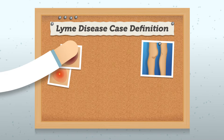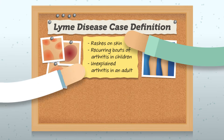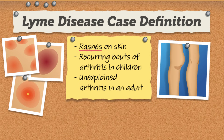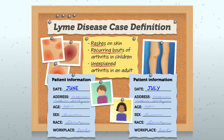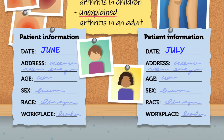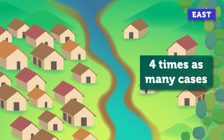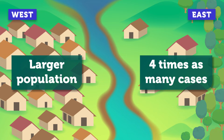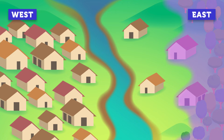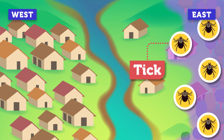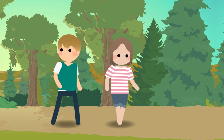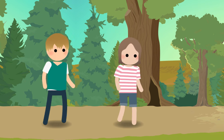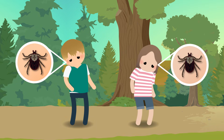First, the researchers put together a case definition. They studied clinical diagnoses in previous years that seemed out of the ordinary, and defined Lyme disease cases as the presence of rashes on the skin, recurring bouts of arthritis in children, or unexplained arthritis in an adult. They also gathered details about each case, like their address, age, sex, race, and workplace. Immediately, some patterns stood out. Most of the cases seemed to happen in June and July, the peak of summer. There were four times as many cases on the east side of the river than on the west side, even though the west side had a bigger population. Lastly, all the cases seemed to be on the edge of the main town, near the woods. That led the researchers to suspect that the disease was being passed on by bites from tiny bugs called ticks. They hypothesized that one side of the river had more ticks than the other. That hypothesis explained the other patterns too. Kids have long, free summers where they can wander around outdoors, which means kids have more chances of being bitten by ticks than adults.